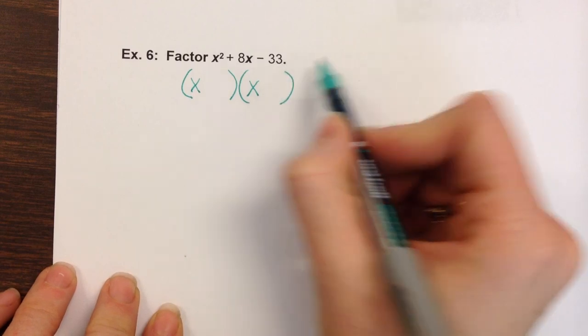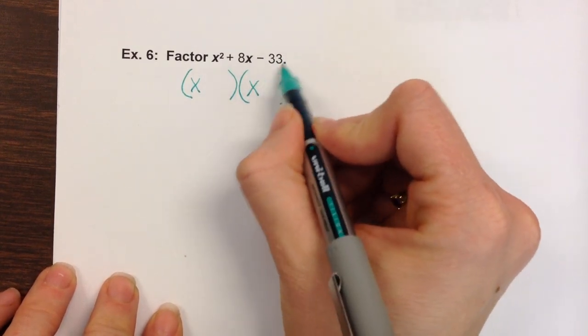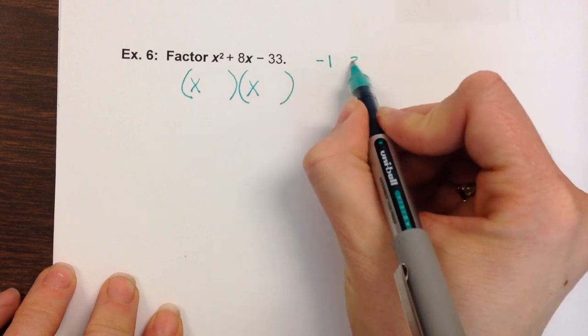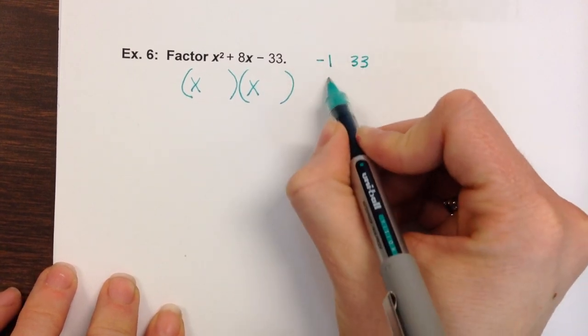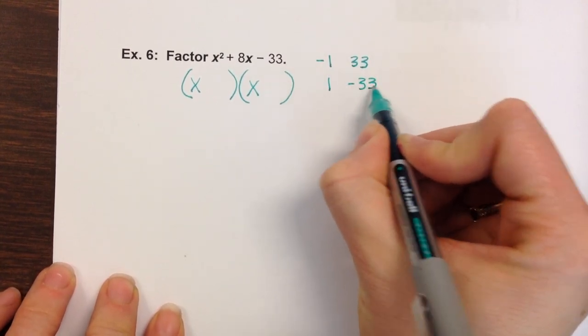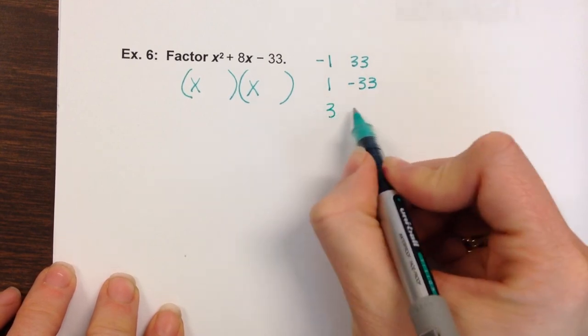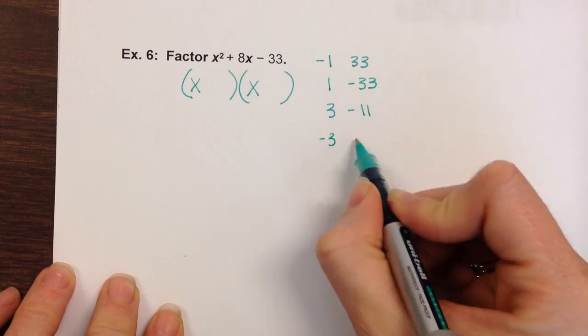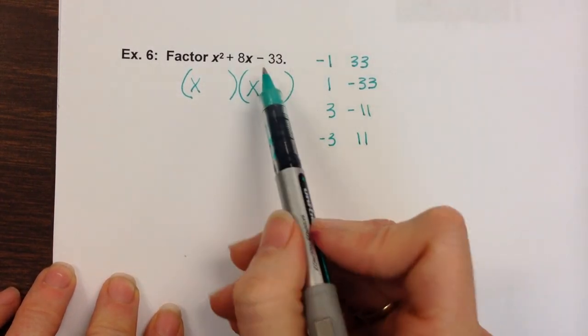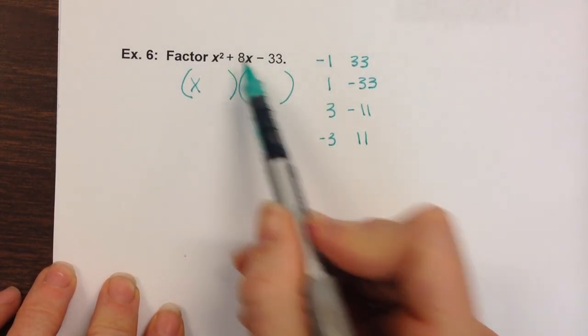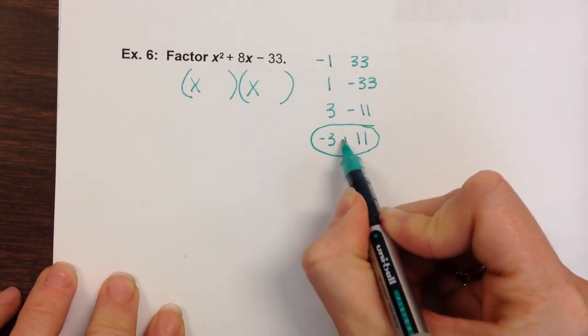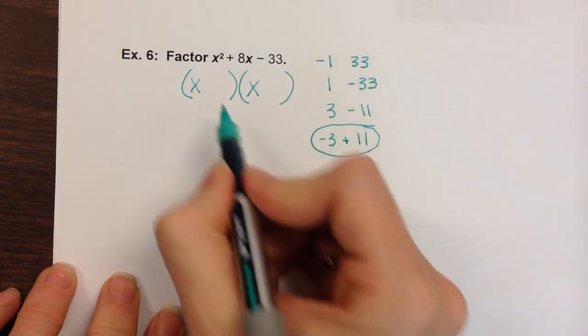Then I move to the last number and think of what numbers multiply together to get negative 33. So I think negative 1 times 33 or 1 times negative 33, 3 times negative 11, or negative 3 times positive 11. So I want to get positive 8 and it looks like these two would add together to get a positive 8.